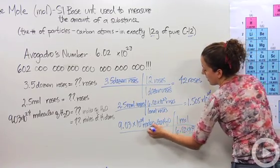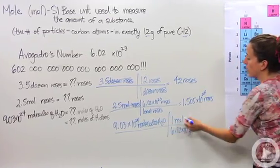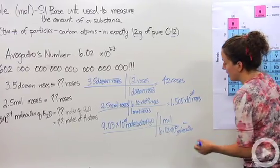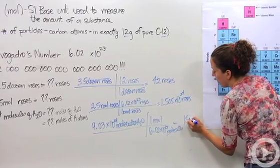Right? So we're going to cross out molecules because one's on top, one's on bottom. We're left with moles. This actually gives me 1.5 moles of water.